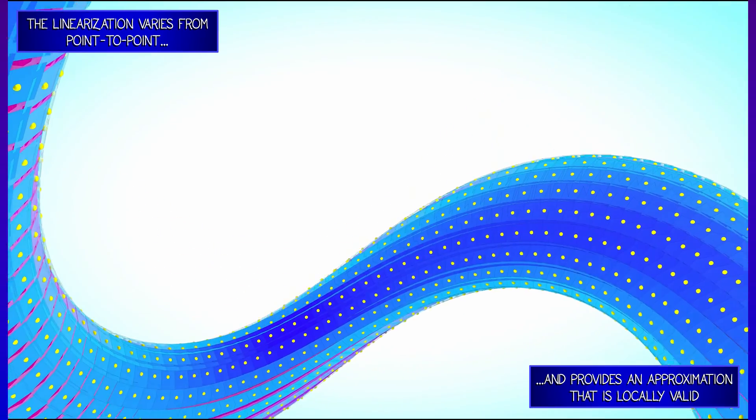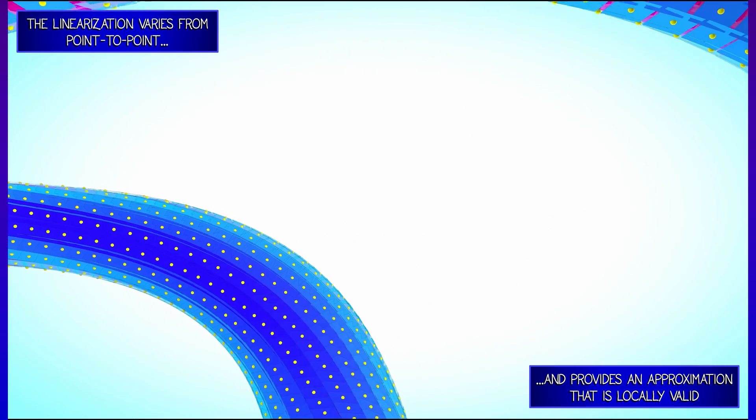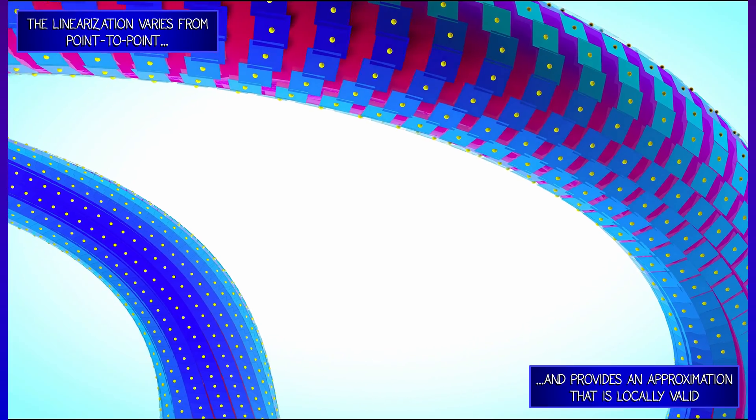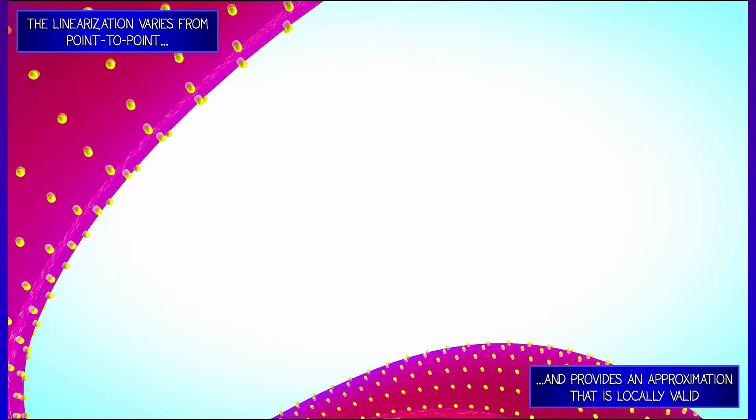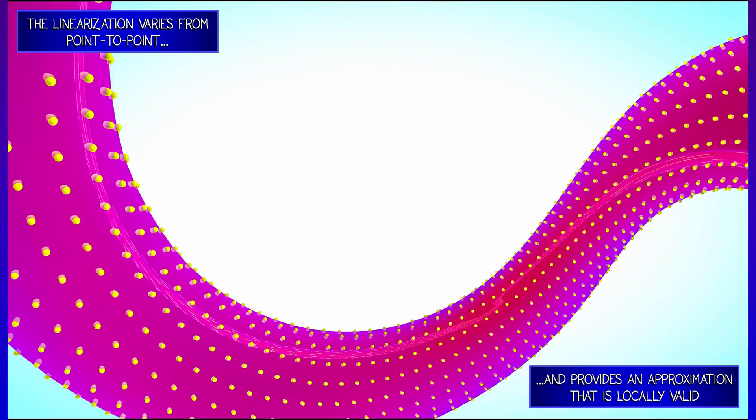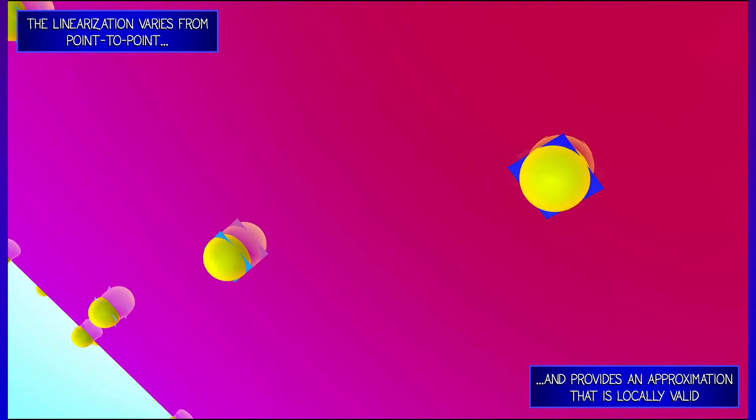And again, the goodness of fit—how good a linear approximation those first-order terms give you—is a function of the geometry of the function that encodes that object, in this case, a surface.